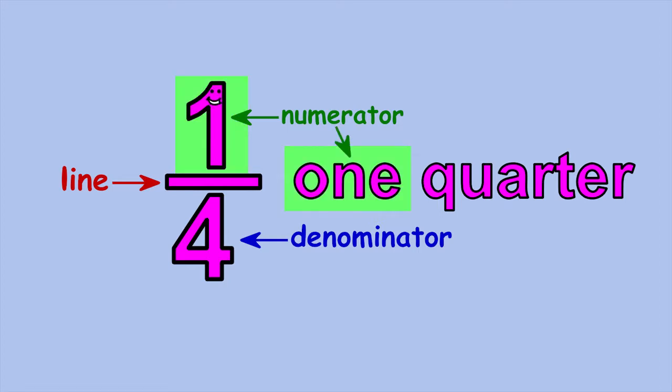The first part of my name is just the name of the number that's my numerator, 1. And the last part of my name comes from my denominator. When the number 4 is written below the line, you say quarter instead of 4. So I'm 1 quarter.